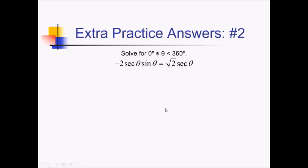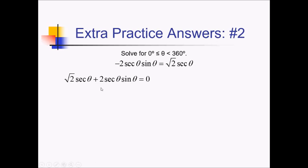On this problem, I'm trying to solve for theta between 0 and 360. This one is extra tricky because we have two different types of trig functions. If you're saying isolate the trig function — what does that even mean in this situation? We have an xy versus x sort of situation. So what we're going to do is get everything on one side and see if factoring will allow us to separate these different trig functions. I'm going to add 2 secant theta sine of theta over to the right side so I don't have to deal with having a negative out in front.